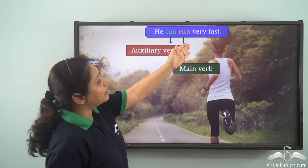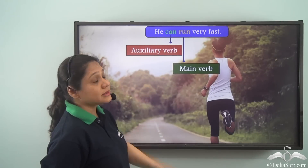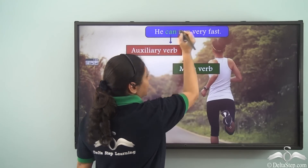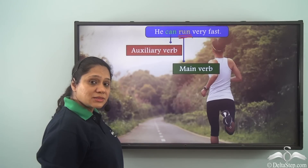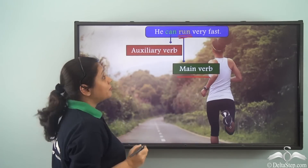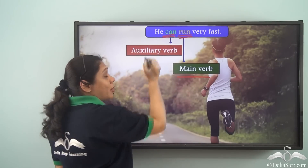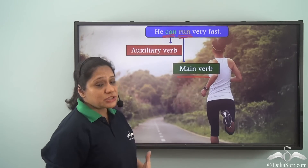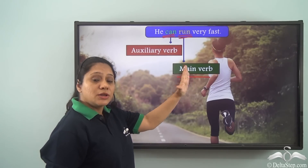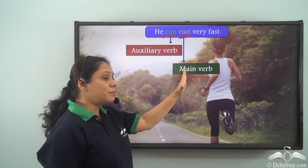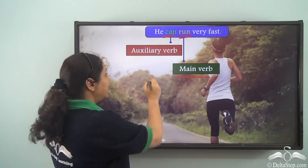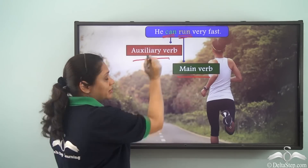In the sentence 'He can run very fast,' 'run' is the main action of the sentence, hence 'run' is the main verb. Whereas 'can' is showing the ability of the person — it is helping us to understand the meaning of the main verb better. Hence 'can' is an auxiliary verb here.